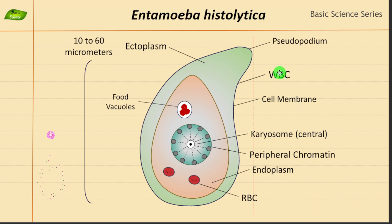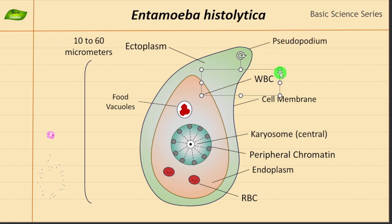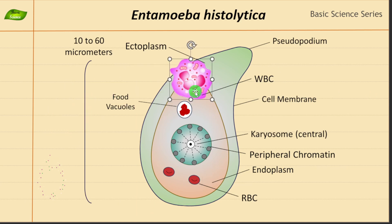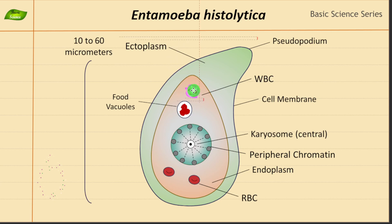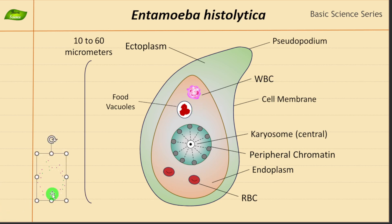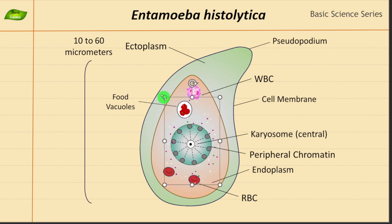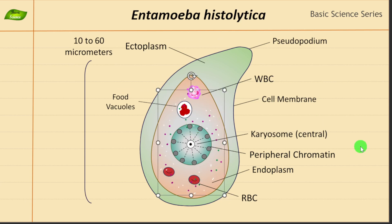We also have WBCs. Amoeba has the ability to engulf white blood cells as well. This is the structure of a white blood cell. As we know, there are various kinds of WBCs, so I'm just representing one of them. We have WBC right over here, and then we have all these structures dispersed in the endoplasm region. I've designed these dots to fill it out so it looks more like dispersed cytoplasm containing various organelles.